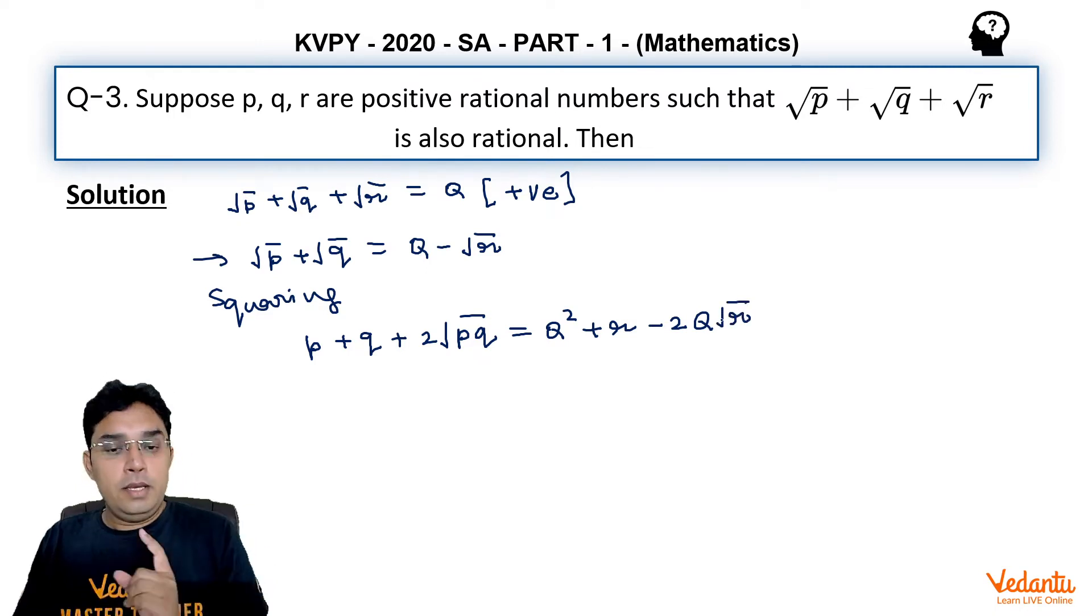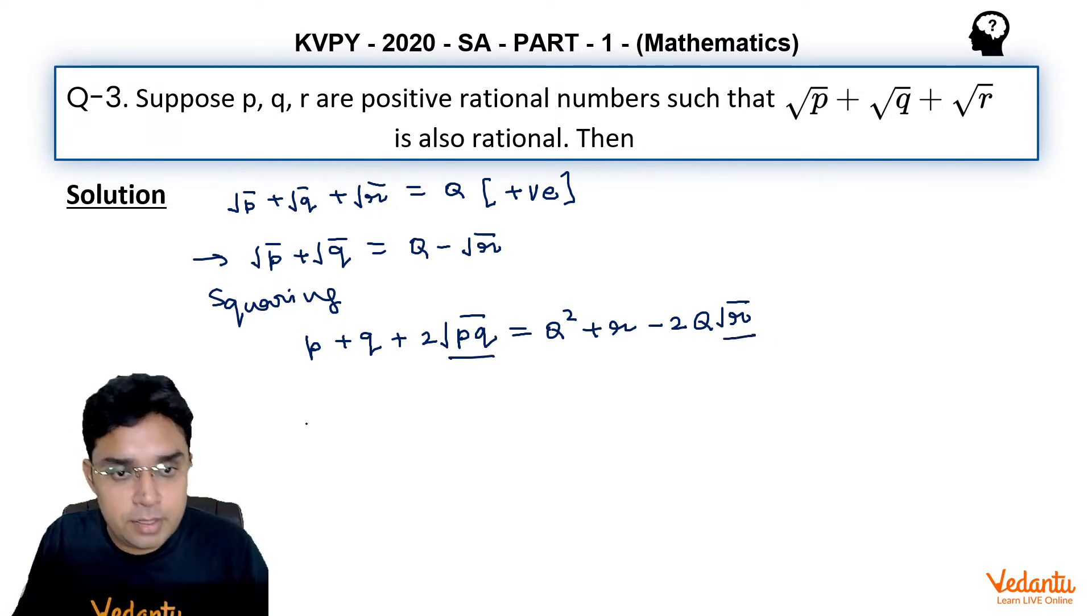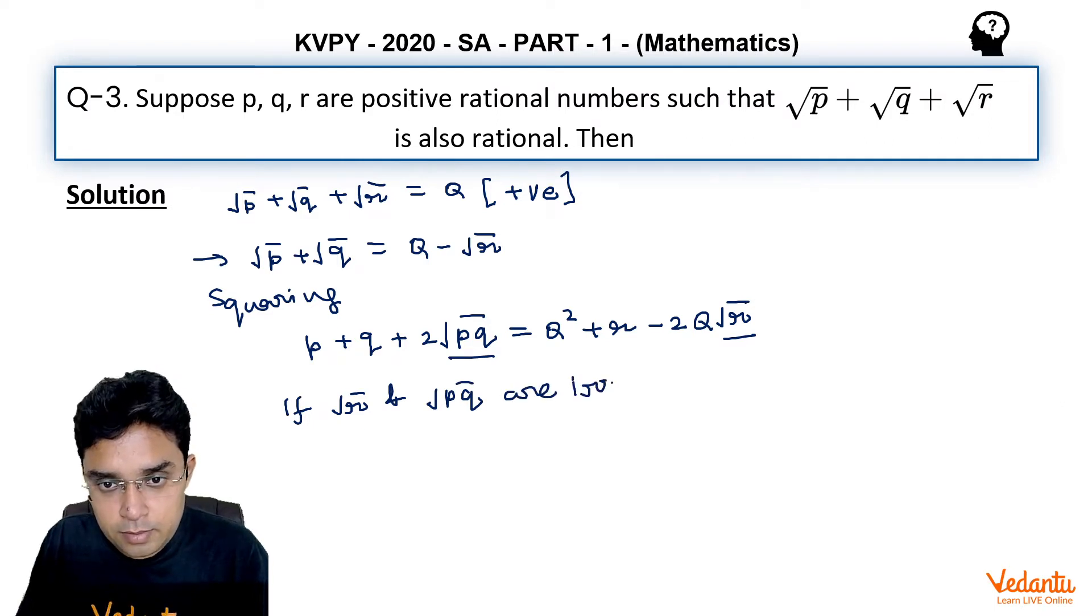Now listen carefully. If I assume that √r and √pq are not rational—that is, if √r and √pq are irrational—